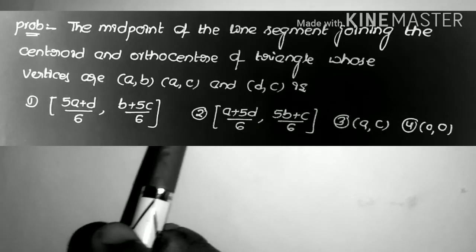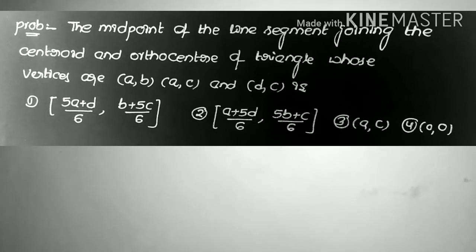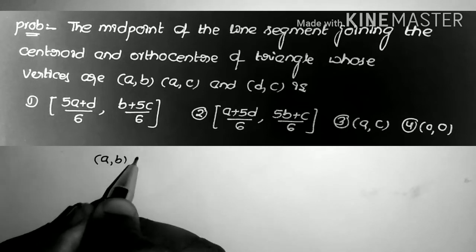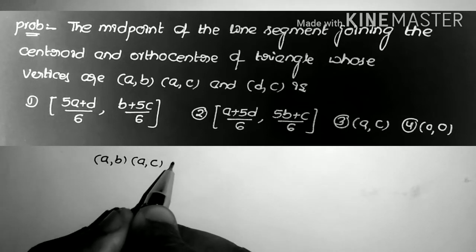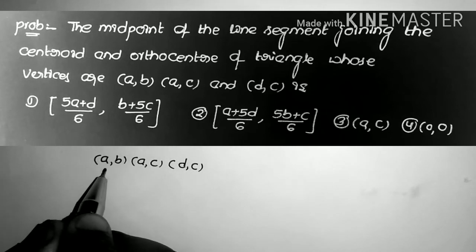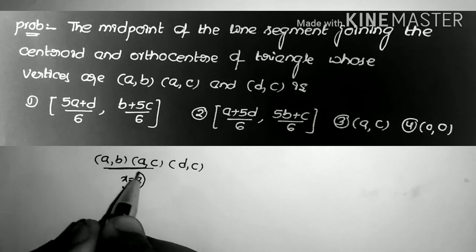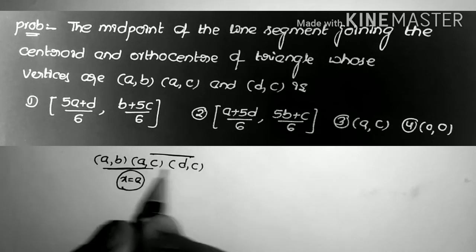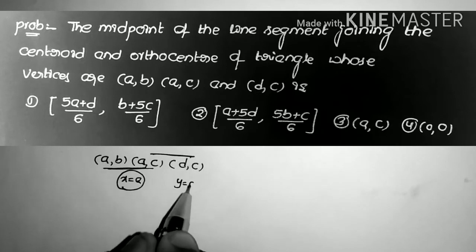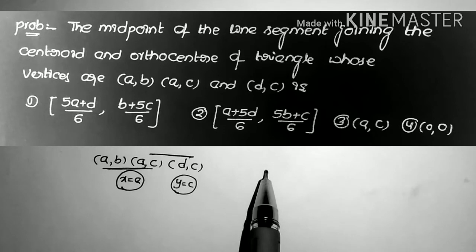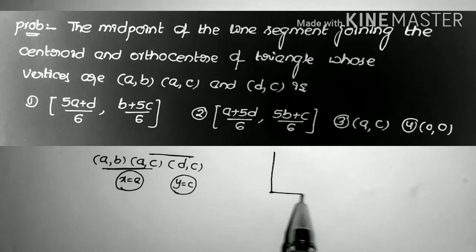Next problem: The midpoint of the centroid and orthocenter of the triangle whose vertices are (a,b), (a,c), (d,c). Observe that the line through (a,b) and (a,c) is x = a, parallel to the y-axis, and the line through (a,c) and (d,c) is y = c, parallel to the x-axis.